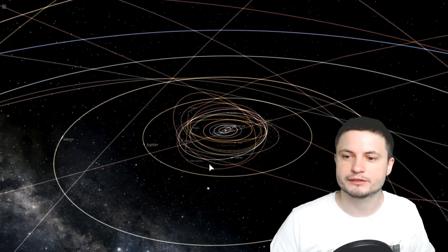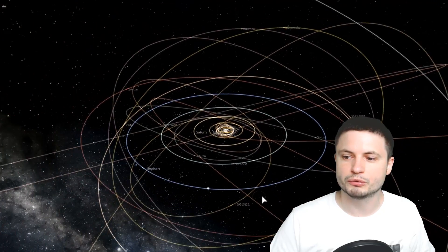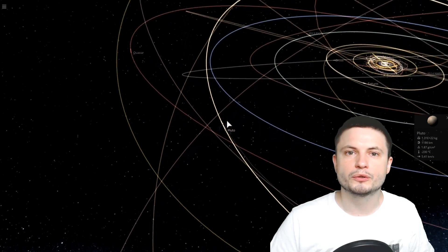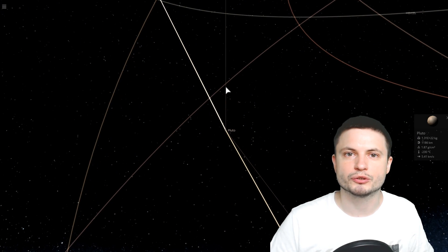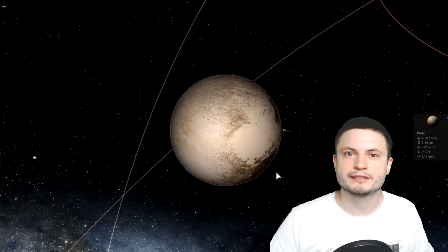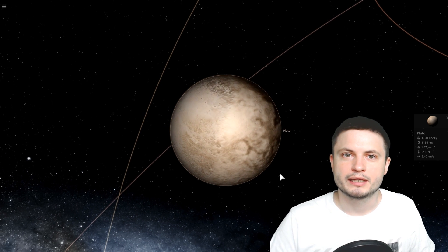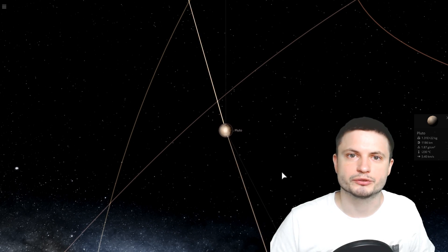Then we have slightly farther away the region known as the Kuiper belt and this is where you can find objects like Pluto, Sedna, Haumea and so on. And a lot of these objects are classified as minor planets or dwarf planets and are not necessarily asteroids. But there are a lot of asteroids in this region as well.